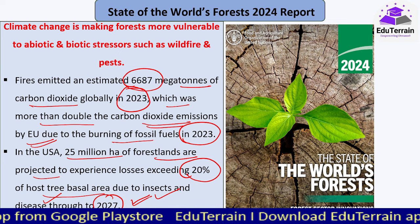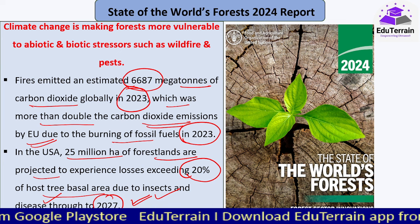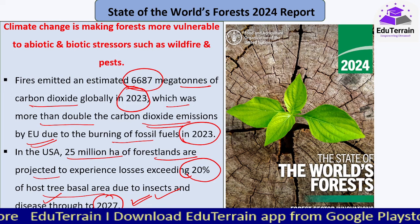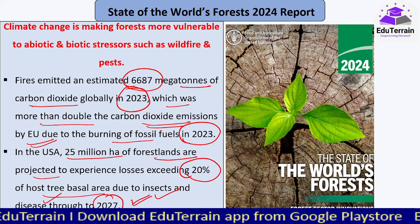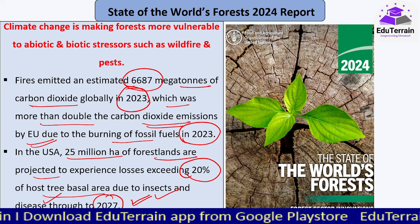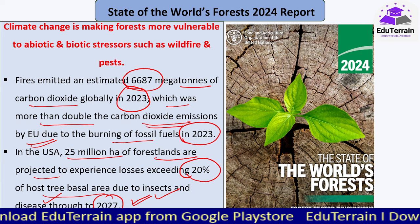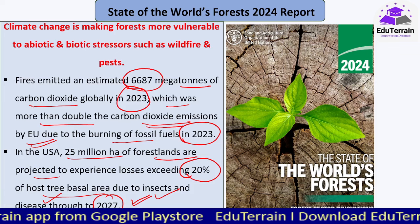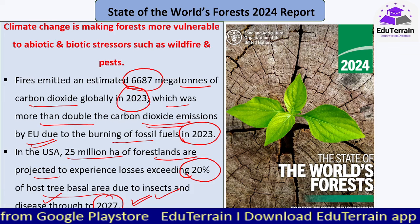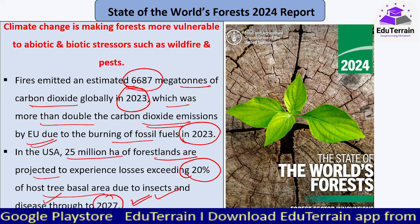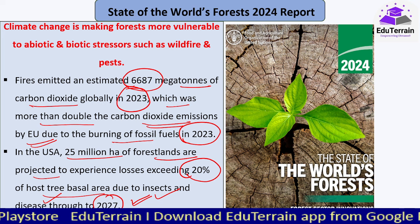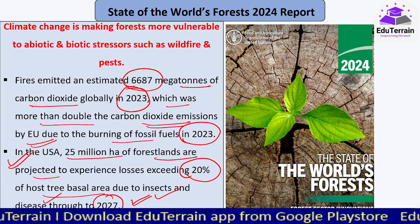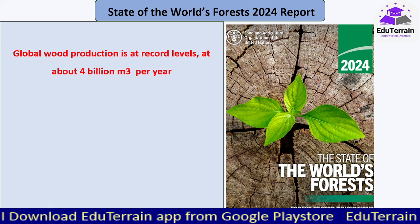This is happening because of drastic changes in temperatures. Whenever there is moisture buildup and temperatures suddenly increase, that creates one of the most conducive conditions for insects and pests to proliferate, leading to disease prevalence — similar to mosquito outbreaks. This is threatening 20% of US forest land through pests and insects alone.